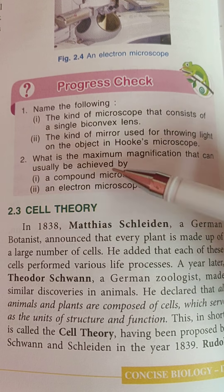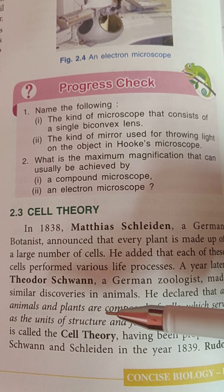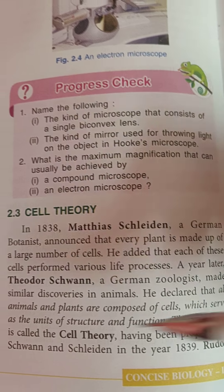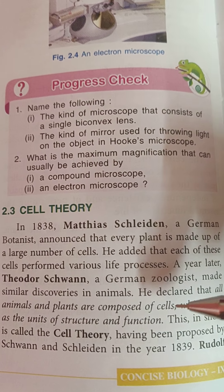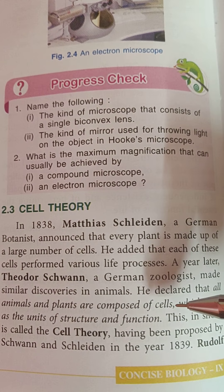A year later, in 1839, Theodor Schwann — a German zoologist — made similar discoveries in animals. So first it was discovered in plants, then in animals. He declared that all animals and plants are composed of cells. He borrowed part of the theory from Schleiden and said that cells also serve as the units of structure and function. This in short was called the cell theory.